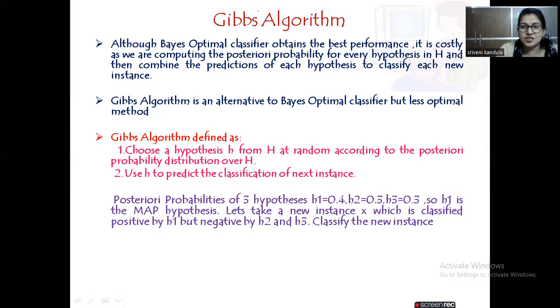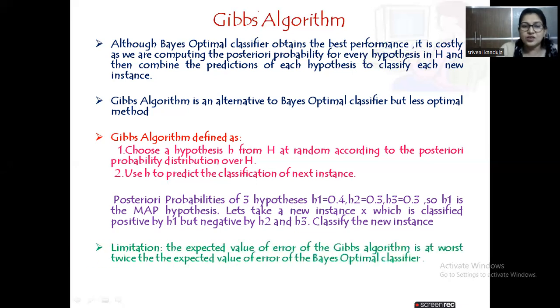But what was the result that we obtained in the Bayes Optimal Classifier? The new instance x was classified as a negative one. So like this, sometimes the result may go worse also, depending upon the hypothesis that you are choosing at random. Ultimately, what we can conclude is the expected value of error.